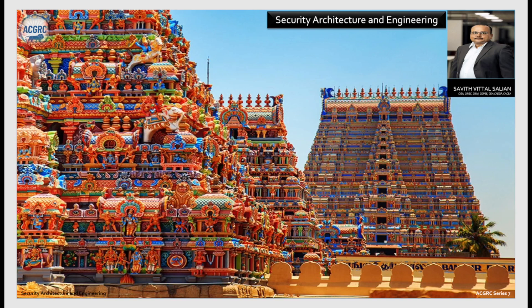In Phase 1, we set the groundwork with core concepts. We unpack security models like Bell-LaPadula, Biba, and Clark-Wilson. We understand system architecture and its principles including the trusted computing base and the reference monitors. We will explore preventive, detective and corrective controls, evaluate systems through Common Criteria, TCSEC and ITSEC, and delve into cryptographic design and secure system components like hardware, firmware and software.